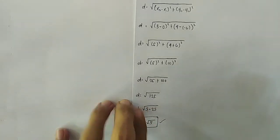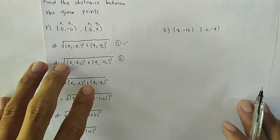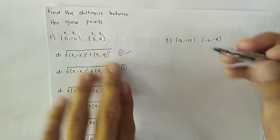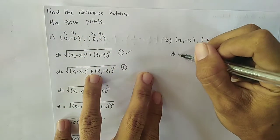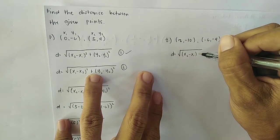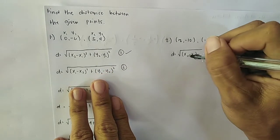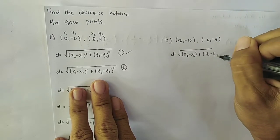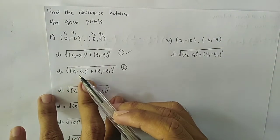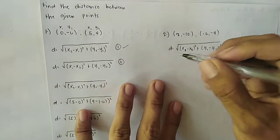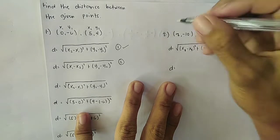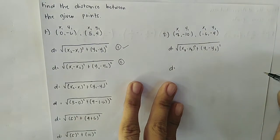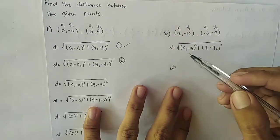Let us move to example number two. We are going to find the distance between the given points using the distance formula. This time let us use the second formula: D equals the square root of (x₁ minus x₂)² plus (y₁ minus y₂)². For the points (2, -10) and (-6, -4), we identify: x₁ = 2, y₁ = -10, x₂ = -6, and y₂ = -4.